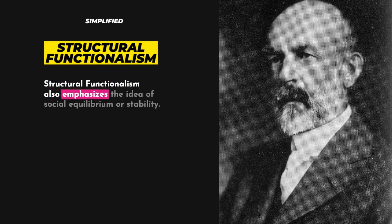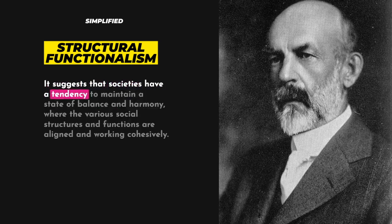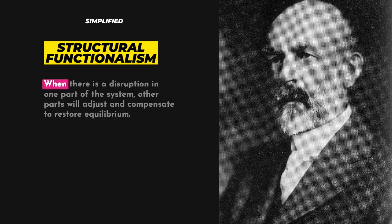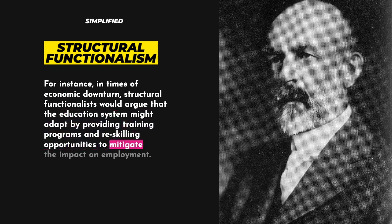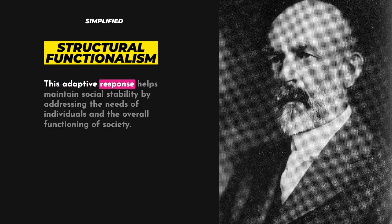Structural functionalism also emphasizes the idea of social equilibrium or stability. It suggests that societies have a tendency to maintain a state of balance and harmony where the various social structures and functions are aligned and working cohesively. When there is a disruption in one part of the system, other parts will adjust and compensate to restore equilibrium. For instance, in times of economic downturn, structural functionalists would argue that the education system might adapt by providing training programs and re-skilling opportunities to mitigate the impact on employment, helping maintain social stability.